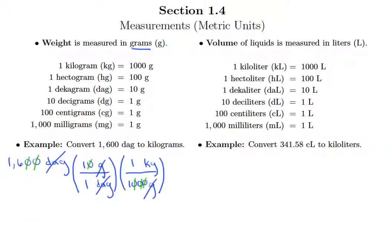So these two zeros cancel with these two zeros. When I've cleaned all this up, I actually don't have to do any difficult arithmetic at all. I end up with just 16 kilograms.